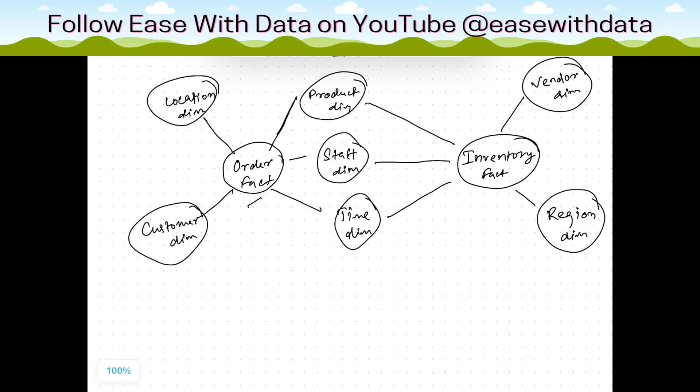Now if you see this, these are the two facts. These three dimensions are shared across two facts, or we can say two subject areas. One subject area is order, another is inventory. So these are shared across two facts or two subject areas.